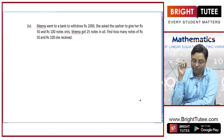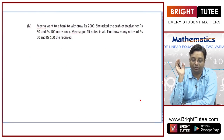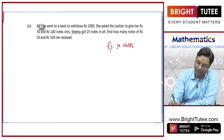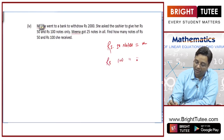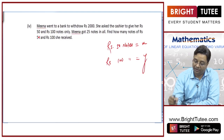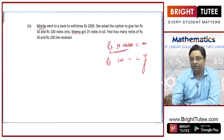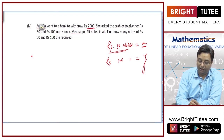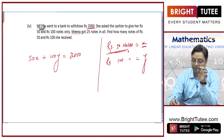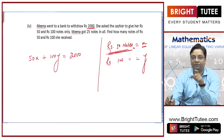Meena went to a bank to withdraw rupees 2000. She asked the cashier to give her 50 and 100 rupee notes only. Meena got 25 notes in all. Let us say rupees 50 notes are x in number and rupees 100 notes are y in number. So, x notes of 50 rupees means 50x rupees, and she withdrew 2000 only. So, 50x plus 100y is equal to 2000 — this is my first equation.